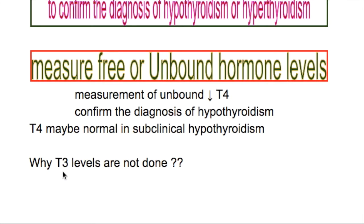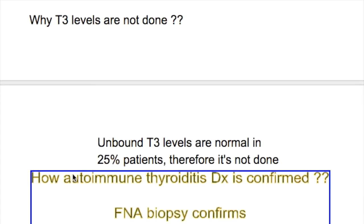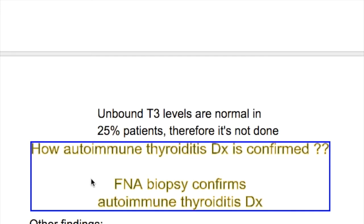Why is T3 not measured in hypothyroidism? Because unbound T3 is normal in 25 percent of patients, and therefore it is not routinely done. This is because of increased conversion of T4 to T3.